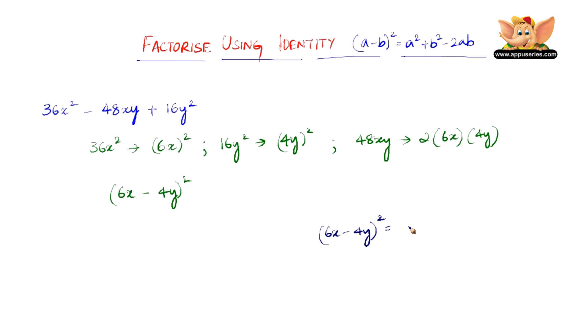Now 6x minus 4y the whole square is nothing but 6x minus 4y into 6x minus 4y. So multiplying this we have 6x into 6x is 36x square. Yes we got the first term correct.